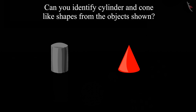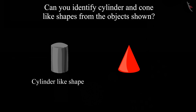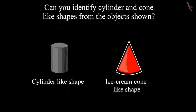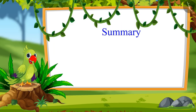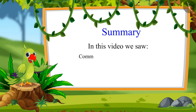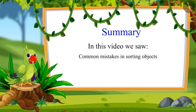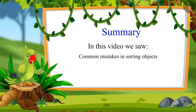Children, was your answer the same? As you have seen, the cylinder-like shape is round on both sides, but the cone-like shape is round on one side and pointed on the other side. So that was all for today. In this video we all saw the common mistakes in sorting objects. I hope you have understood this topic properly. Bye, children!